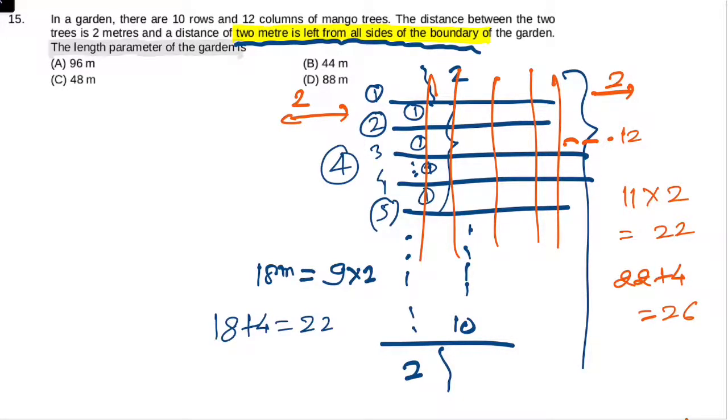So the length parameter, or perimeter, is twice into 22 plus 26, that implies 2 into 48, which ultimately is 96 meters. So the answer is option A. Thanks for watching the video.